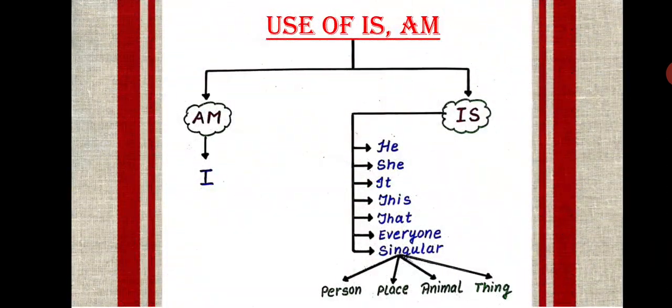Now children, let's just have a quick recap of the friends of is and am through this chart. So am is having only one friend, that is I. Just look on the left hand side. Am is only having a single friend, that is I.